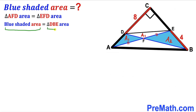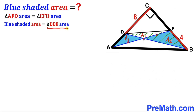We are talking about this whole triangle DBE area. Since the area of triangle AFD equals the area of triangle EFD, our task is now to calculate the area of triangle DBE.